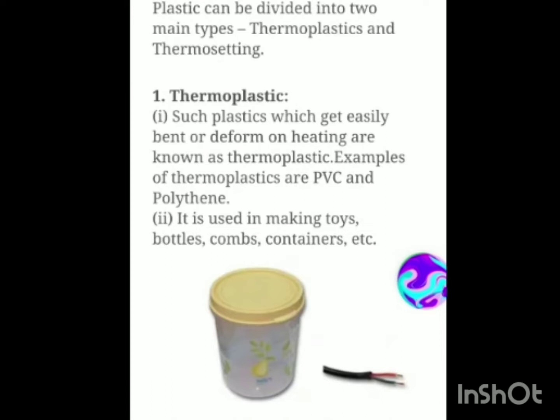Plastic is divided into two types: thermoplastic and thermosetting. Such plastics which get easily bent or deformed on heating are known as thermoplastic. For example, if you pour hot water on a water bottle you can see that it gets melted or its shape changes. Such delicate plastics are thermoplastic. Examples include PVC and polythene. PVC is seen in wires and pipes — PVC pipes used for watering plants. It is also used in making toys, bottles, combs, etc.